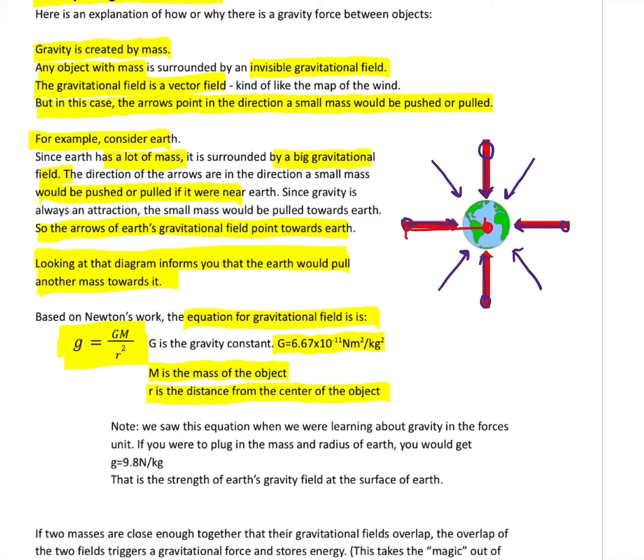r is the distance from the center of the object, so from the middle of the Earth out to wherever we imagine the mass to be. That's what we would have to use for r if we were calculating the gravitational field strength at some point. We saw that equation before. We plug in the numbers for the radius and mass of Earth - like if we're standing on the edge of the Earth, that's where the 9.8 newtons per kilogram comes from.